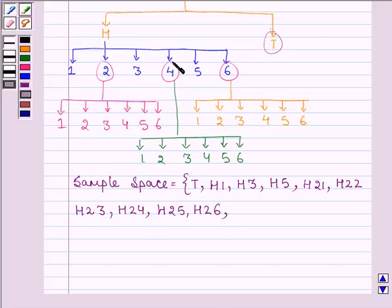Now we have H41, H42, H43, H44, H45 and H46. Since 4 is also an even number, and if an even number appears on the second throw of the dice, then again one dice is thrown. So we have H41, H42, H43, H44, H45 and H46.